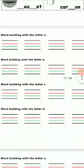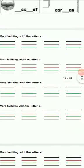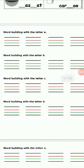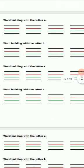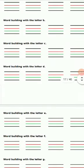Word building — when we build any word, like word building with letter A: apple, arm, ant. Word building with letter B: ball, bus, bat. Word building with letter C: cup, can, car, cake.